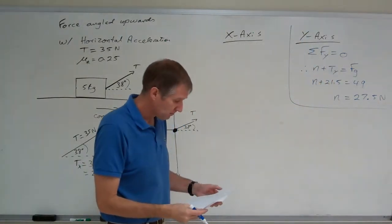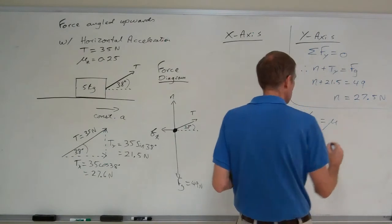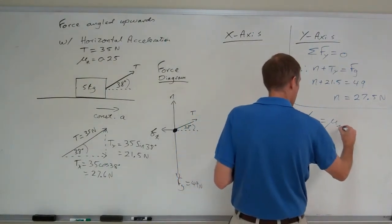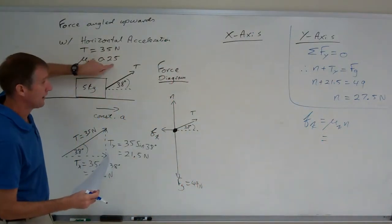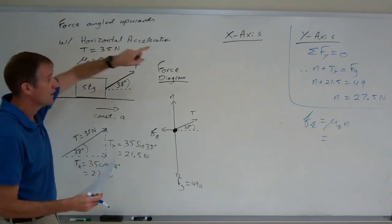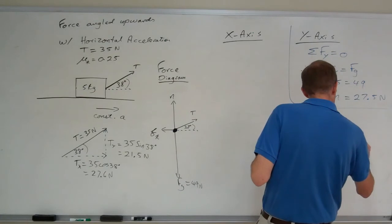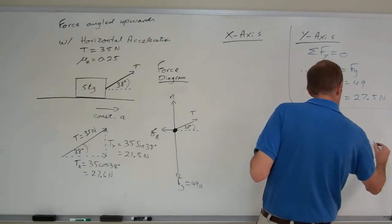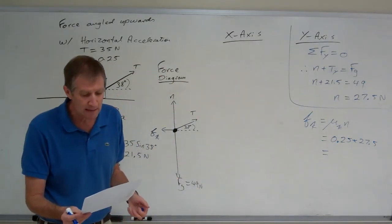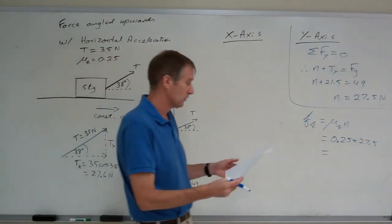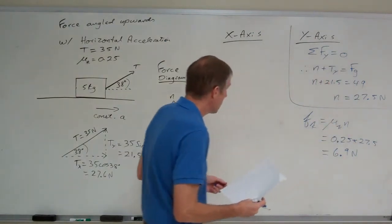That's, we're done with the y-axis. Now I need to calculate the friction. Kinetic friction equals mu times the normal force. Mu I made up here is 0.25 coefficient of kinetic friction times the normal force. And that comes out to be, where is it, 6.9 newtons.